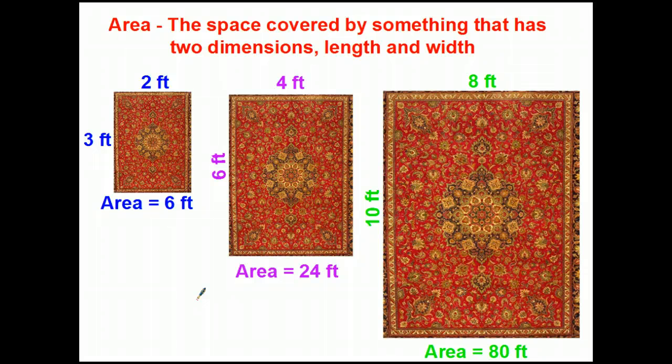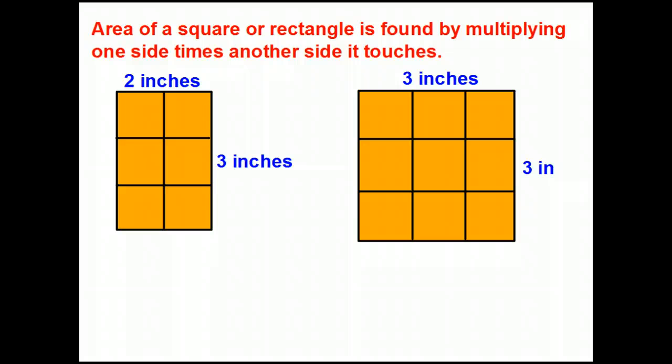Well you've probably guessed by now that 3 times 2 is 6 and 6 times 4 is 24 and 10 times 8 is 80 and that we calculate area by multiplying one side times the side next to it. And there it is. Area of a square or rectangle is found by multiplying one side times another side that it touches. You can't do the side across from it. It's got to be touching.